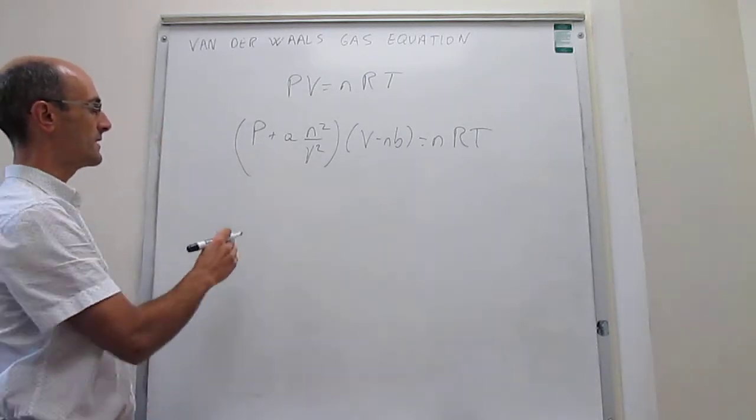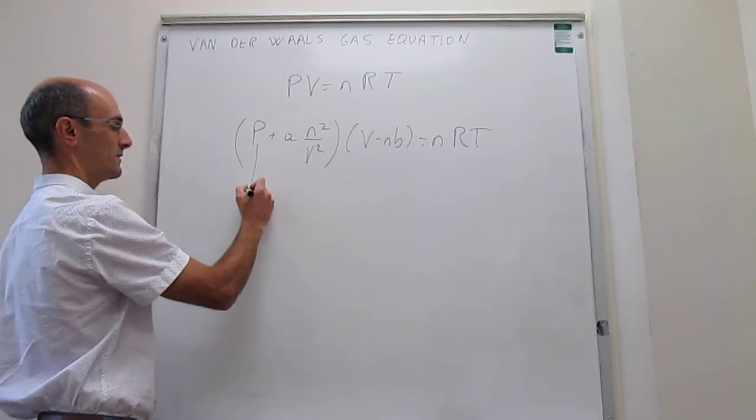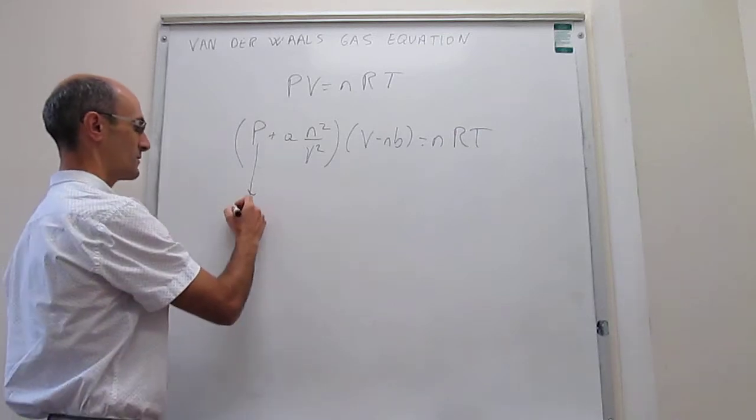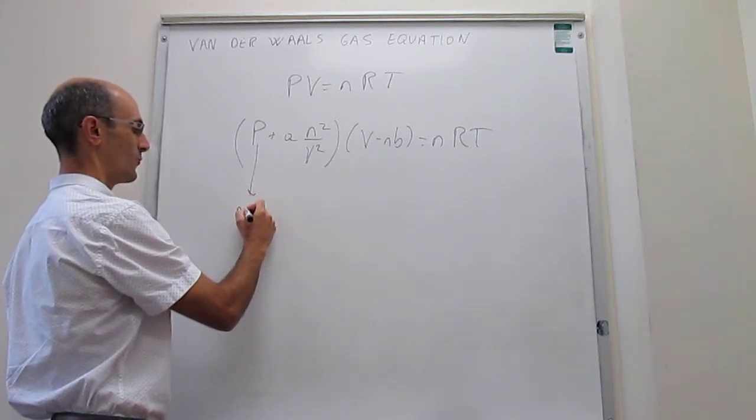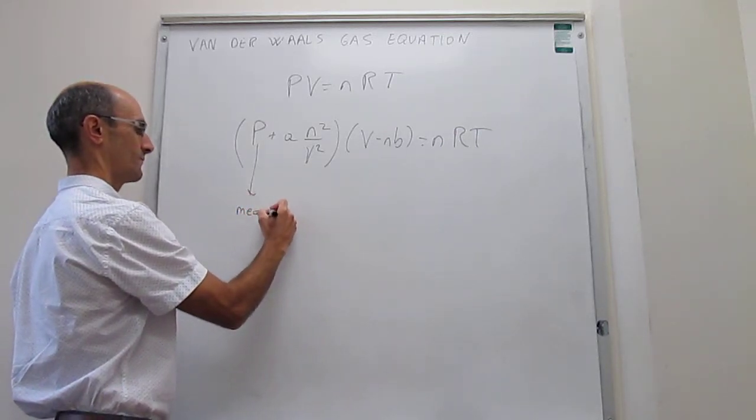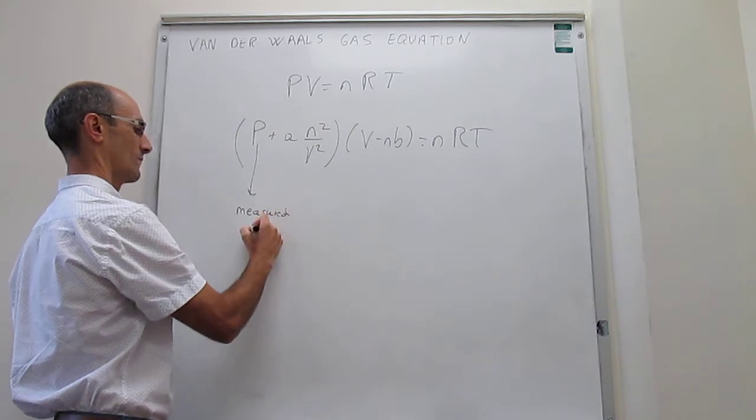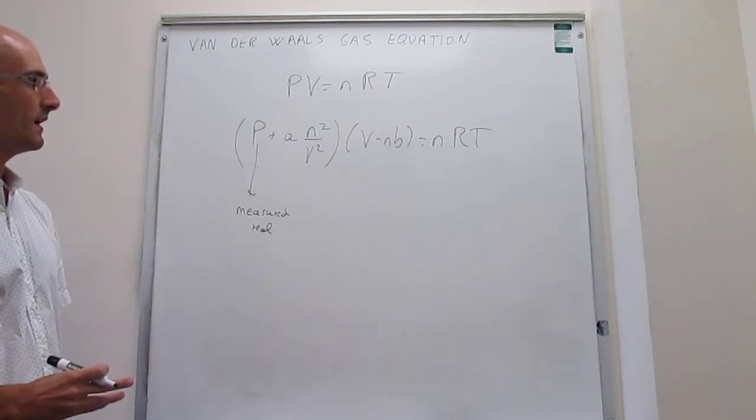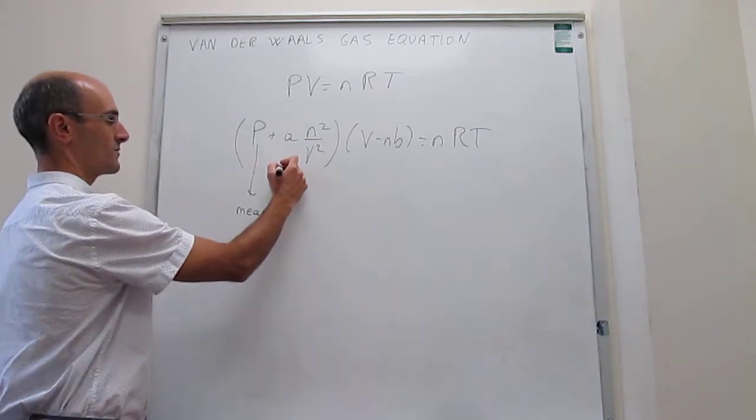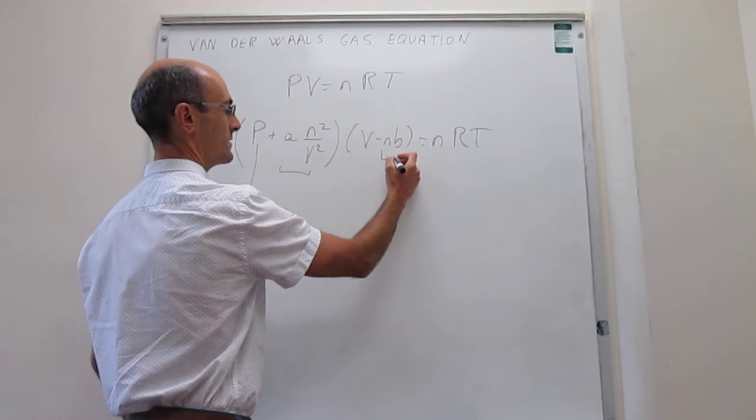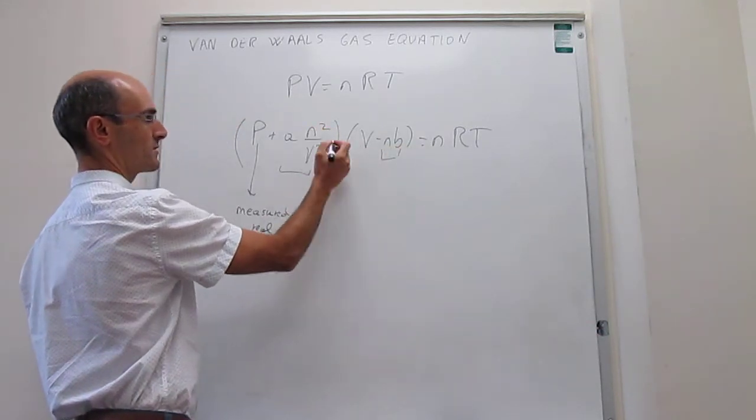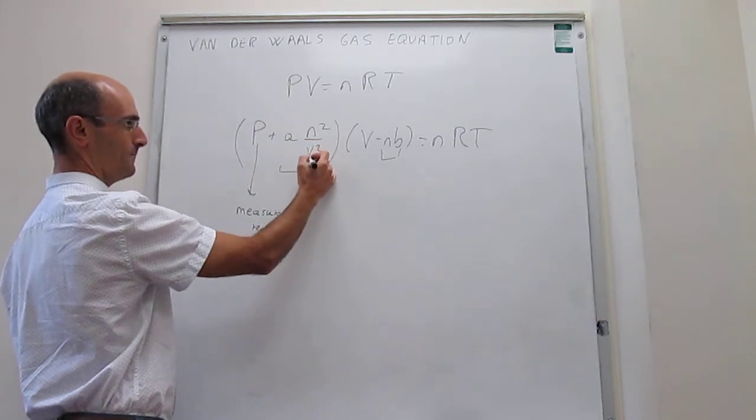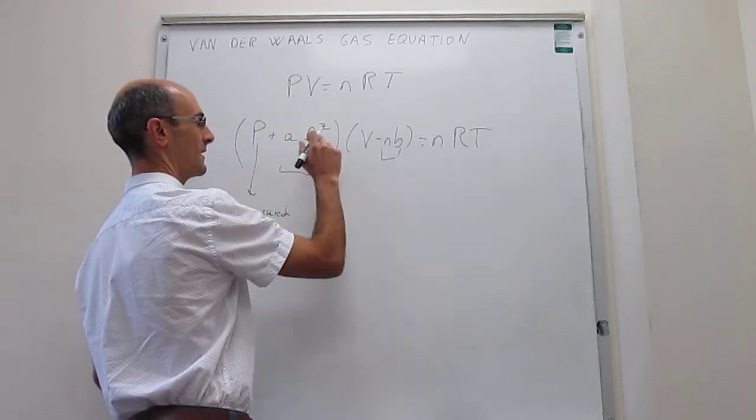Now, something that is important is that this pressure that you have right here is not the same pressure as that one. That is what we call the ideal pressure, and this is what we call the measured or real pressure. All right, so then let's try to see what these corrections are for. Notice that they both depend on the number of moles, which is N, and then this correction depends also on the volume. Okay, and they have constants A and B.